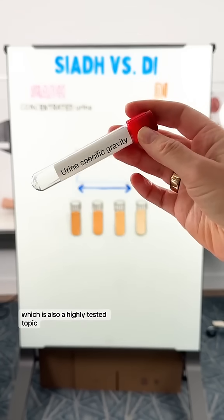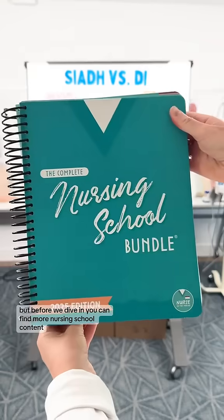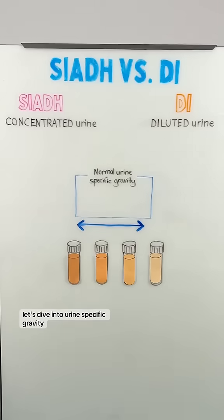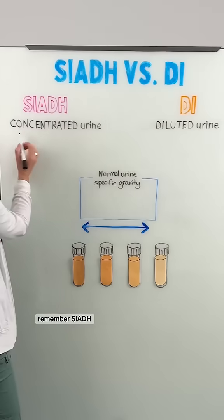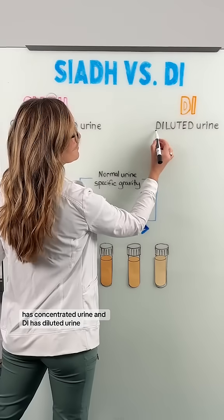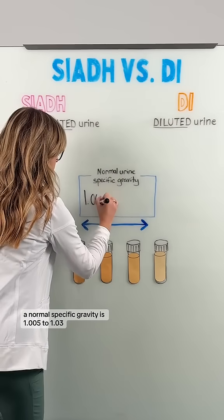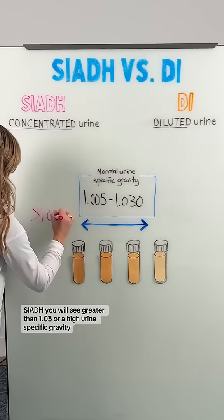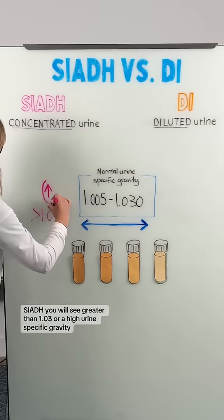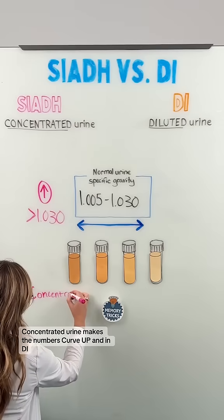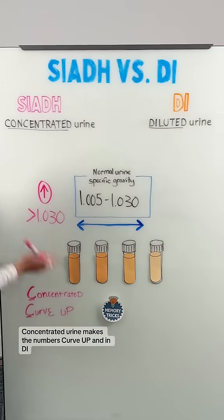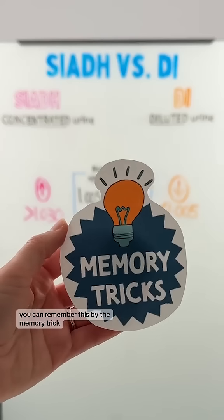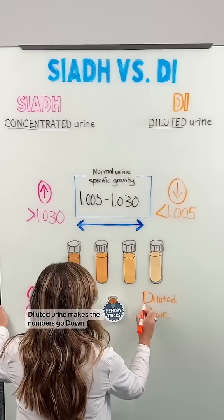Now let's look at urine specific gravity, which is also a highly tested topic. Remember, SIADH has concentrated urine and DI has diluted urine. A normal specific gravity is 1.005 to 1.03. In SIADH, you will see greater than 1.03, or a high urine specific gravity — you can remember this because concentrated urine makes the numbers curve up. In DI, you'll typically see a urine specific gravity of less than 1.005 — diluted urine makes the numbers go down.